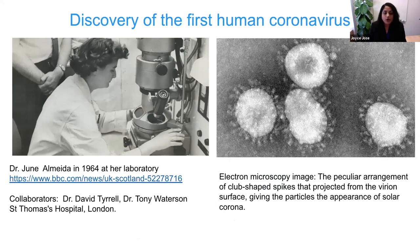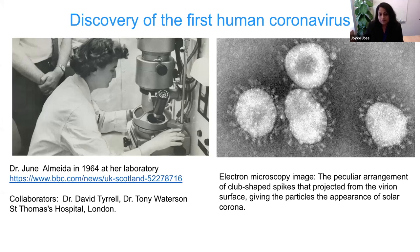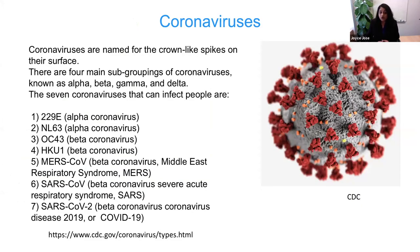Coronaviruses were identified in 1964 by June Almeida, who observed electron microscopy images of spiky, club-shaped particles. The name comes from the halo around the particle called a corona. There are many coronaviruses, seven of which can infect humans. Their name comes from these crown-like spikes on the surface.